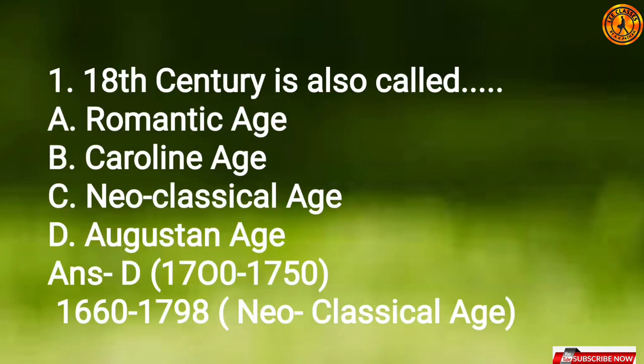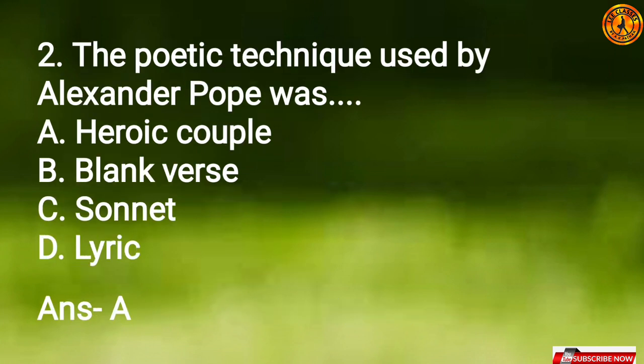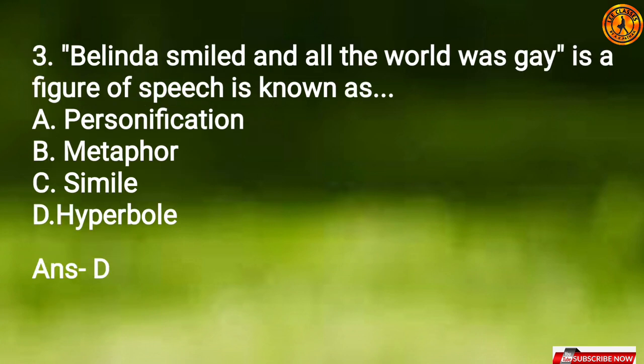Question 1: The 18th century is also called — Option D, the Augustan Age. Question 2: The poetic technique used by Alexander Pope was — Option A, heroic couplet. Question 3: 'Belinda smiled and all the world was gay' — the figure of speech used here is known as —